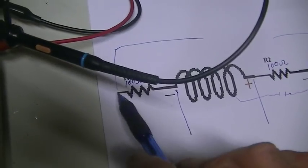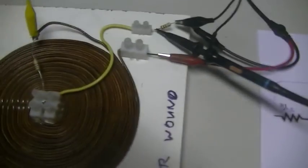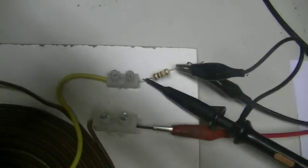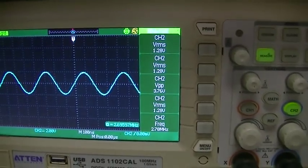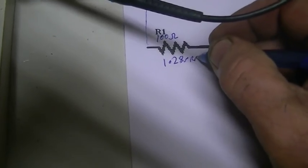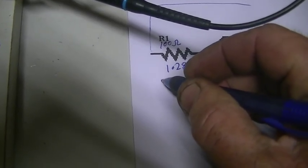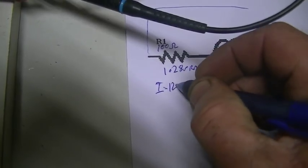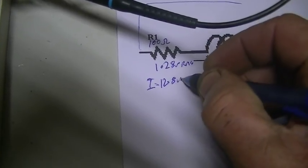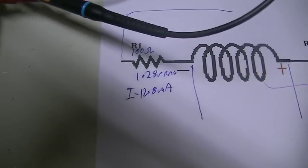So first we're measuring the current into our coil as a whole. And that current happens to be, well we have 1.28 volts across that resistor. 1.28 volts. RMS of course. That means we have current is 12.8 milliamps. Okay, so next we want to measure the voltage across the coil.